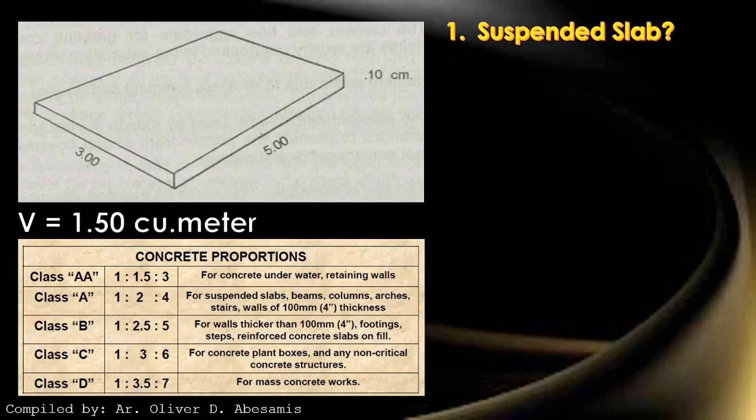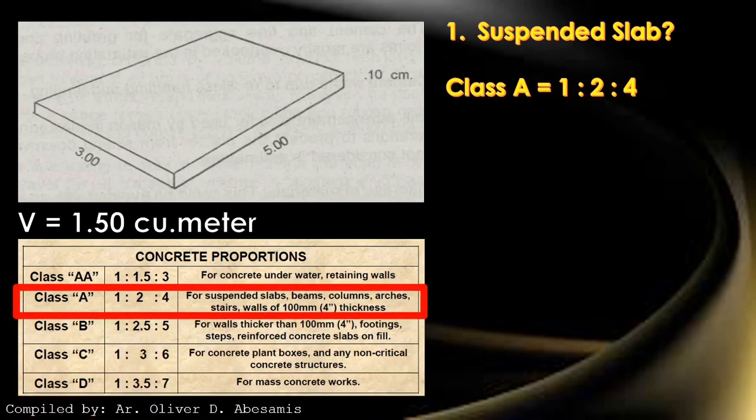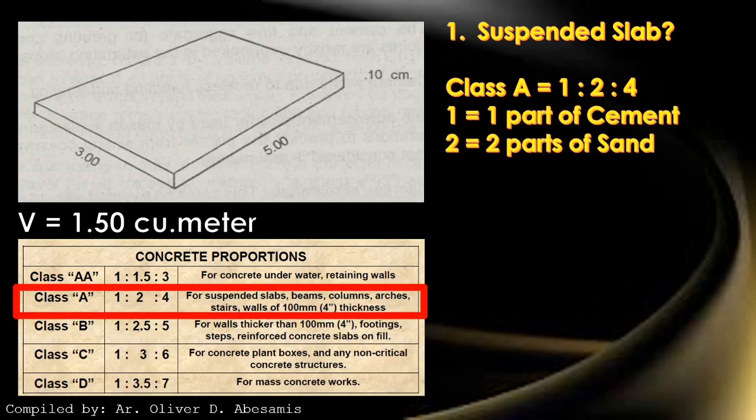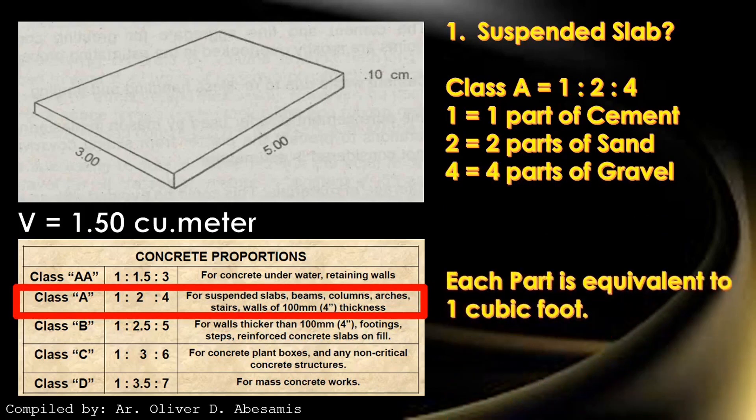In our case, suspended slab, we will use class A having a concrete proportion of 1:2:4. The first number is 1 part of cement. The second number is 2 parts of sand. And the third number is 4 parts of gravel. Each part is equivalent to 1 cubic foot.